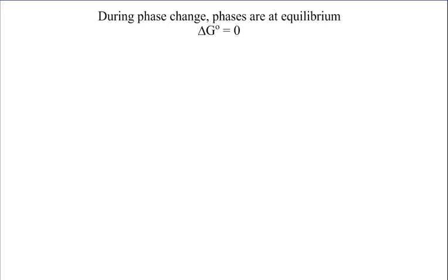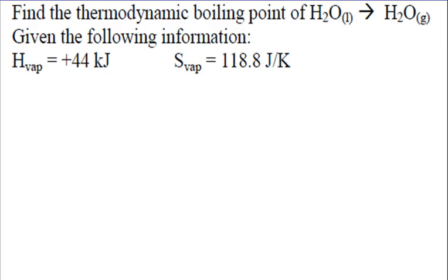So if we know that delta G equals zero, we can use that information to determine what the temperature is, what the thermodynamic boiling point or melting point of something could be. So let's look at one of these. Here we're asked to find the thermodynamic boiling point of water as it goes from liquid to gas, and we're given a delta H and a delta S.